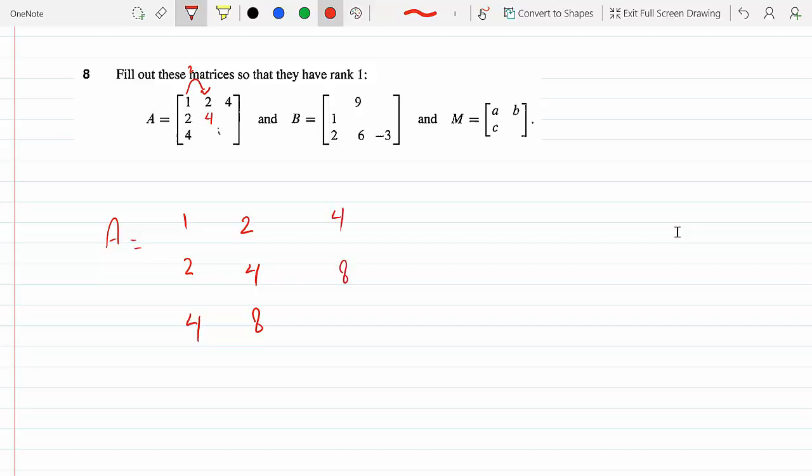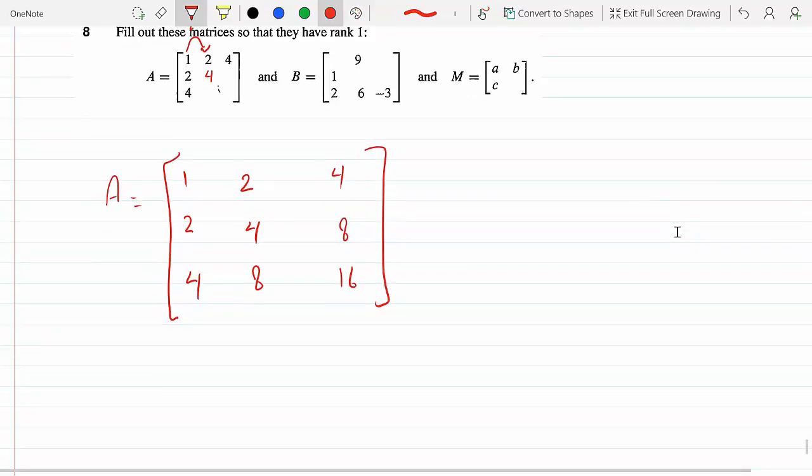Okay, what about B? Same kind of thing. If the pivots are 1, there's a 9, but then the relationship is between this 2 and the 6, so the 6 is 3 times the 2.